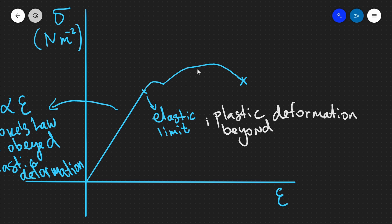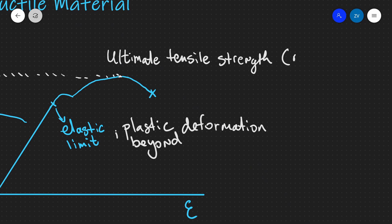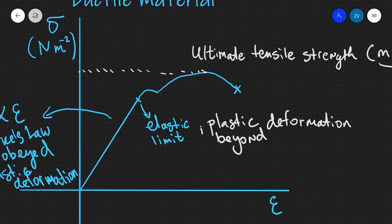There is a certain maximum stress that the material can withstand, called the ultimate tensile strength. It's important to note that the ultimate tensile strength is the maximum stress — that is, the maximum force per unit cross-sectional area — not simply the maximum force applied. Beyond this point, the material reaches its breaking point and fractures.